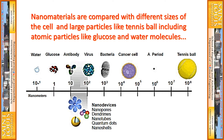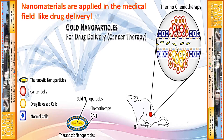Nanomaterials are compared with different sizes of the cell and large particles like a tennis ball, including atomic particles like glucose and water molecules. Nanomaterials are also applied in the medical field for drug delivery — it is possible that nanomaterials may be used as delivery agents for a certain drug or medicine to be delivered to a certain part of the body.